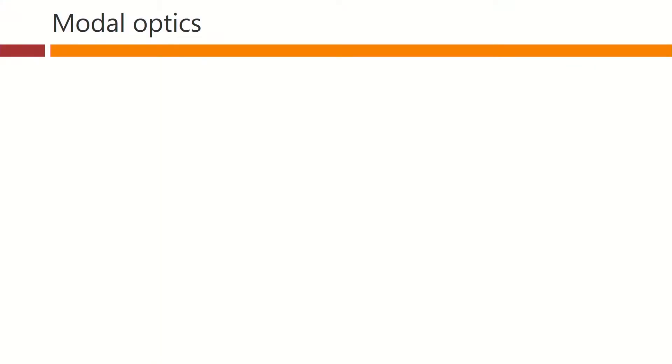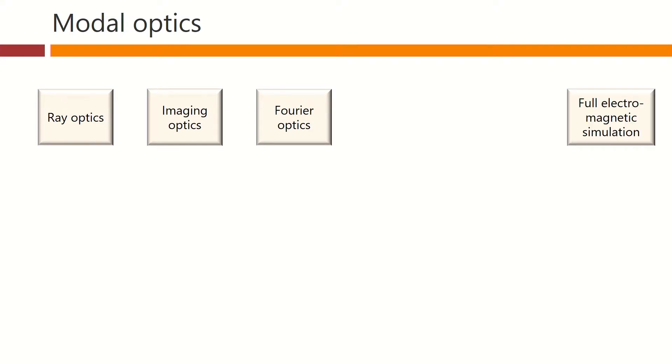There are many ways we're used to thinking about optics. We have ray optics, imaging optics, Fourier optics where we start to bring in the wave nature of light, and all the way at the other end we have full electromagnetic simulation of electromagnetic fields.